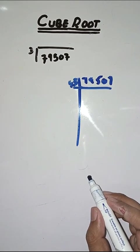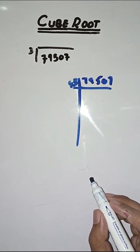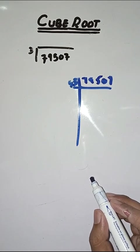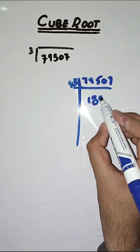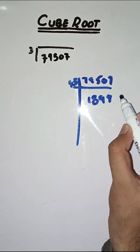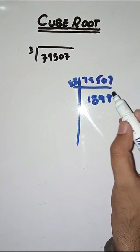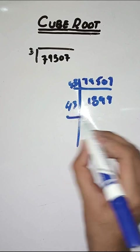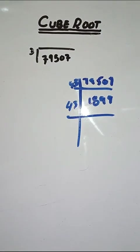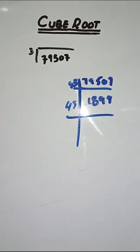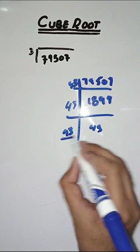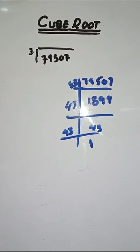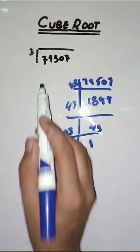We divide by 43, which is equal to 1849. Now again dividing by 43, it is equal to 43. So 43 ones are 43, giving us three factors of 43.